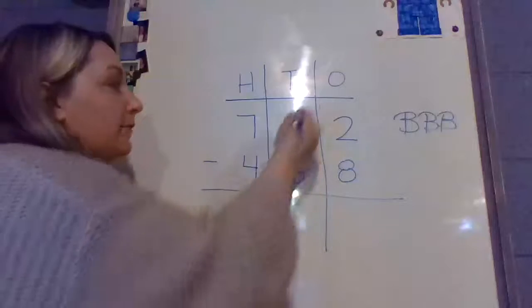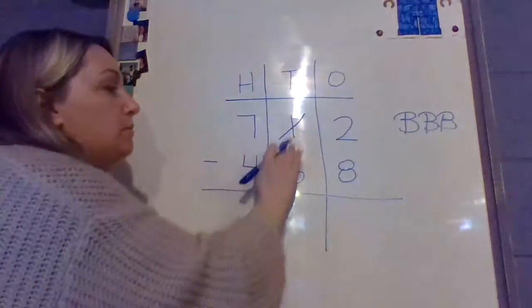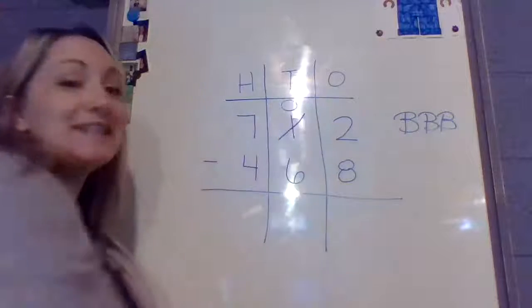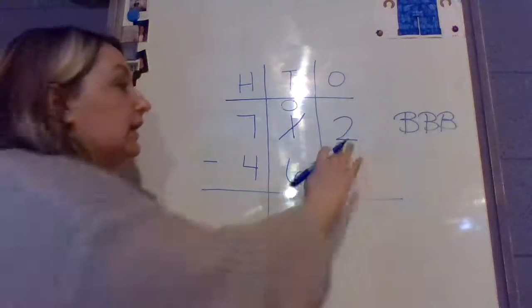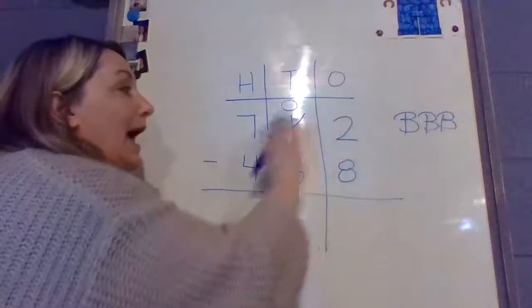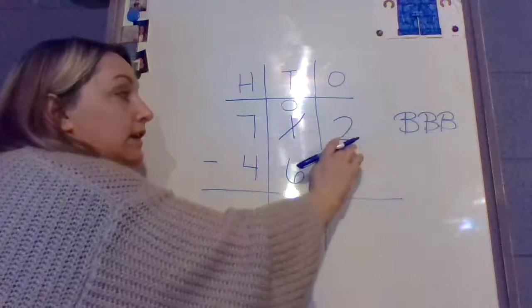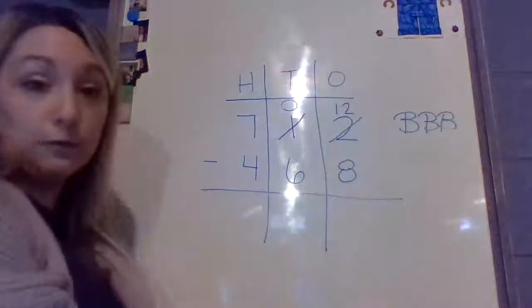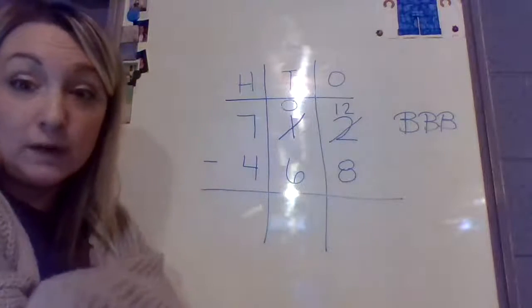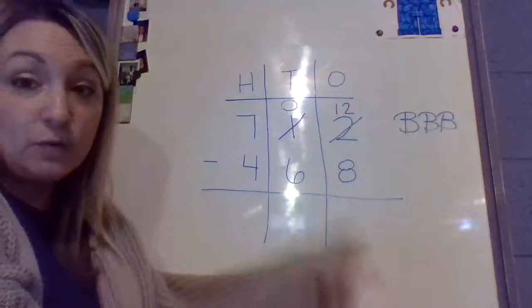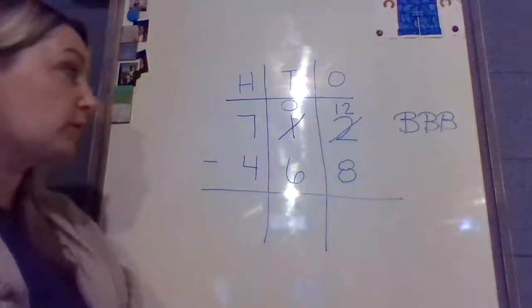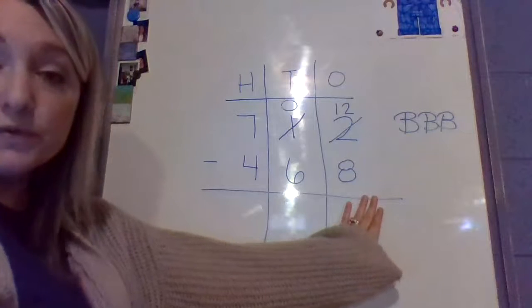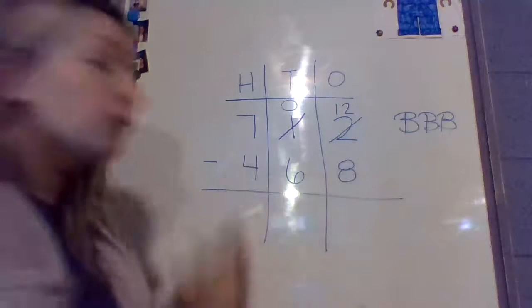So we're going to borrow from this 1. We're going to move that group of 10s over. So we now have 0 10s left, and we're going to add that group of 10 over here. So we're going to add 10 to this 2, so that 2 now becomes a 12. Because we already had 2 1's there, and we added an extra 10 1's. 10 1's plus 2 1's equals 12 1's. Now we're going to subtract. 12 minus 8 equals 4.